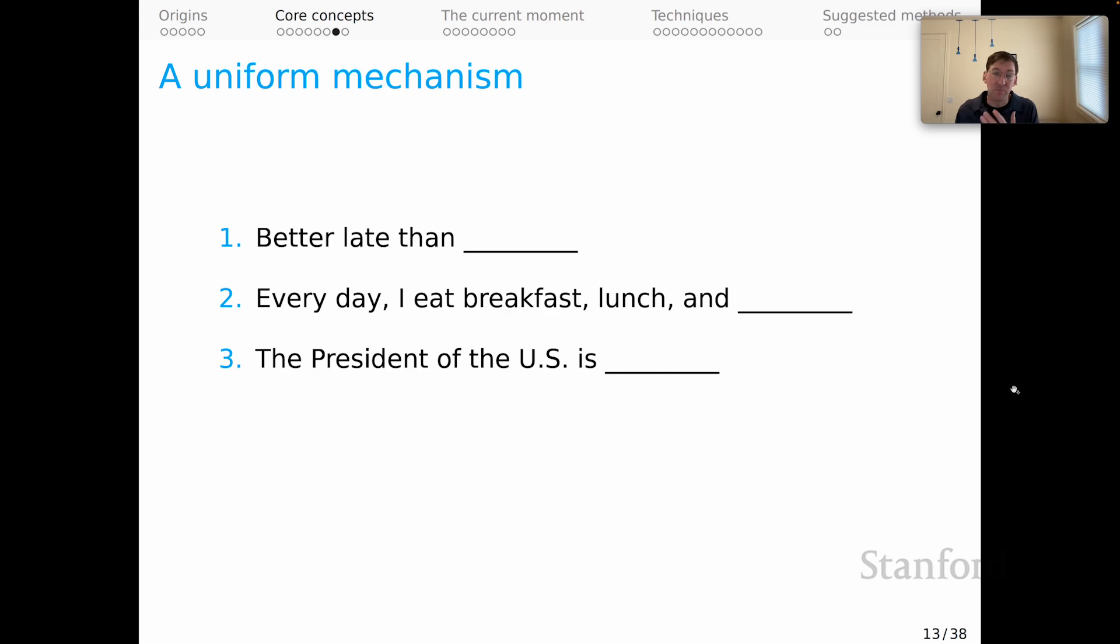And again, when you prompt it with the president of the US is, and it gives you the name of a person as an answer, that might look like it has stored some knowledge about the world. And maybe there is a sense in which it has. But as far as we know, and mechanistically, that is simply offering a high probability continuation of the sequence. So when you get to something like the key to happiness is, and it offers you an answer that seems insightful, you should again remind yourself that that is just a high probability continuation of the input sequence based on all the training experience that the model has had.